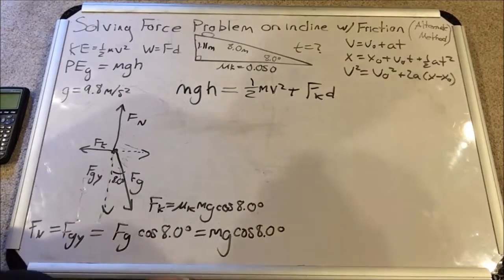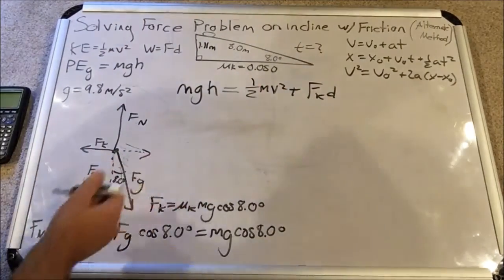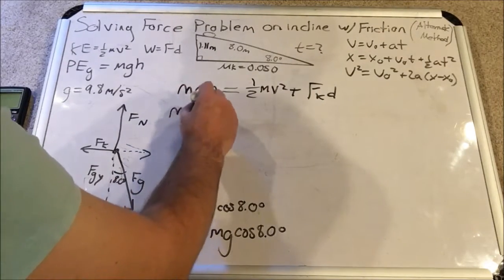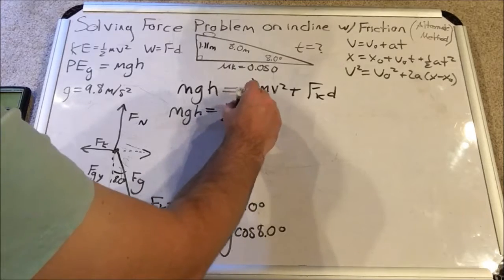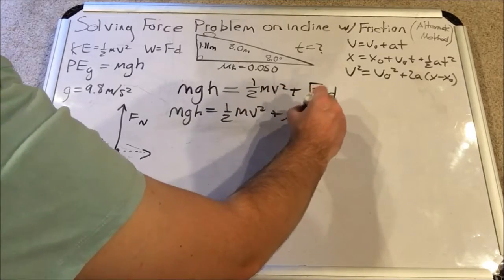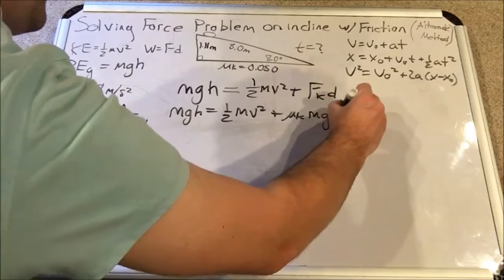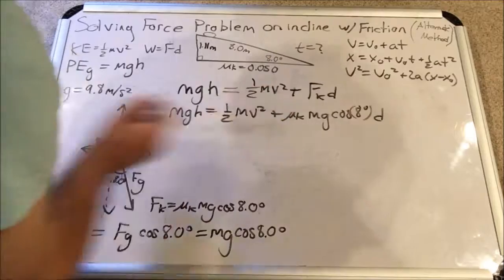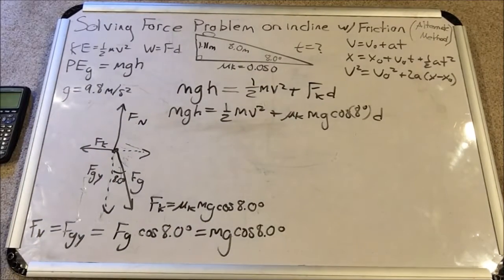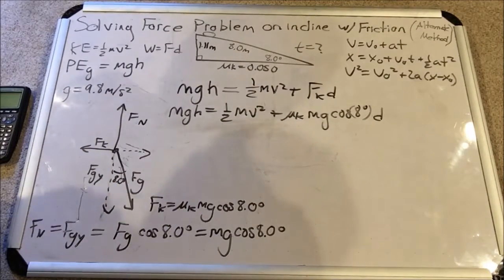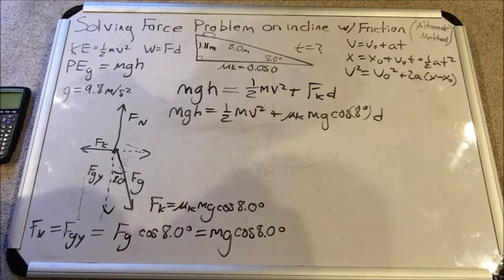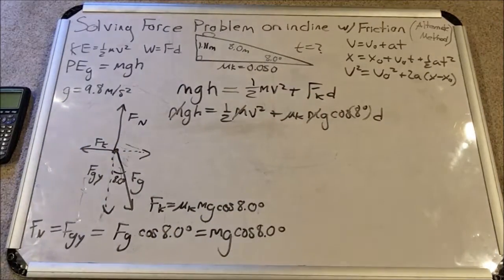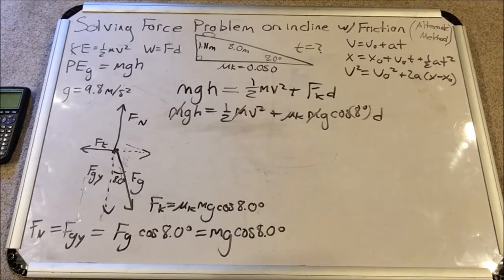So what I could do right now is take this expression and put it right here. So now I have that the friction force is equal to mu k times mg cosine 8.0 degrees, the vertical component of gravity. So now that I'm going to make some more space here, I'm going to rewrite this expression with fk substituted for this expression I have down here. mgh equals one half mv squared plus mu k mg cosine 8.0 degrees times d. Now we have our full expression which will allow us to solve for the velocity. Notice how I didn't give you the mass of the soap. The reason you didn't get the mass, again, is because it cancels because it's in every single term of this equation. So I can divide it out.